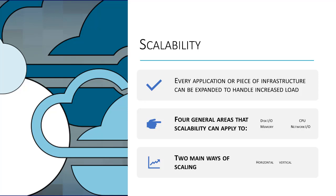When discussing scalability within the context of cloud computing, you'll often hear about two main ways of scaling: scaling up or scaling wide — essentially scaling vertical or scaling horizontal. Let's look a little bit deeper into what each of these means.